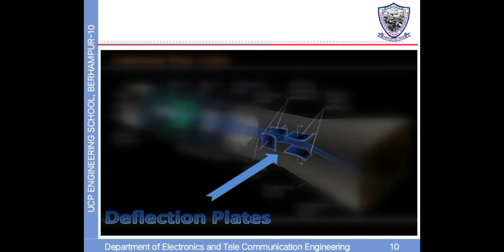Deflecting plates. This is one application present in CRT for the oscilloscope. In these tubes, an electric field is created by two pairs of paired electrodes mounted at right angles, through which the electron stream flows between cathode and anode.